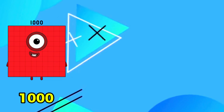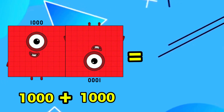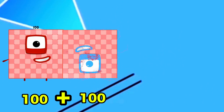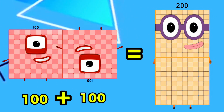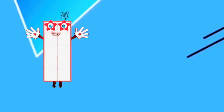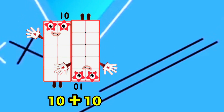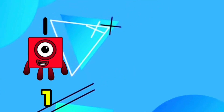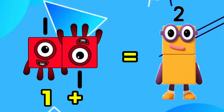1,000 plus 1,000 is equals to 2,000. 100 plus 100 is equals to 200. 10 plus 10 is equals to 20. 1 plus 1 is equals to 2.